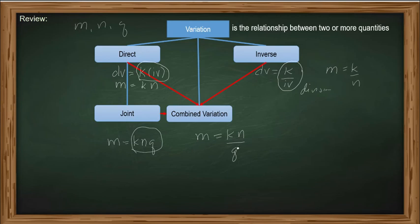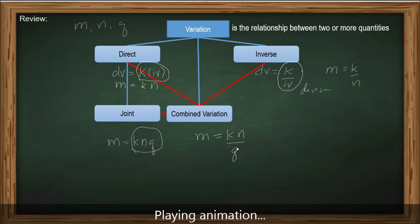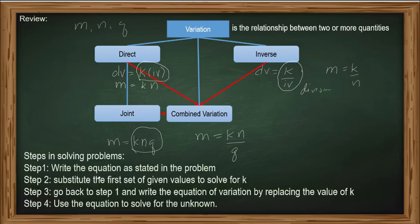The next question is: in solving problems, what processes must be followed? We have the following steps. Step 1: write the equation as stated in the problem. Step 2: substitute the first set of given values to solve for K. Step 3: go back to step 1 and write the equation of variation by replacing the value of K. And lastly, use the equation to solve for the unknown.